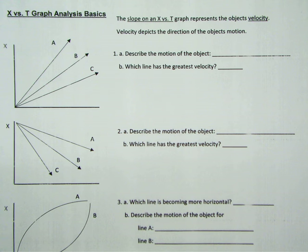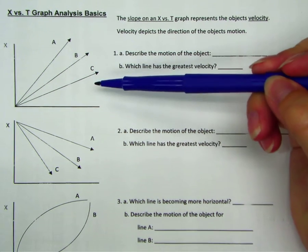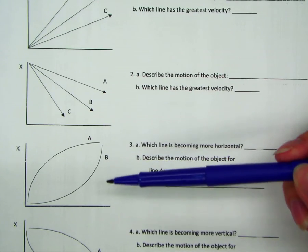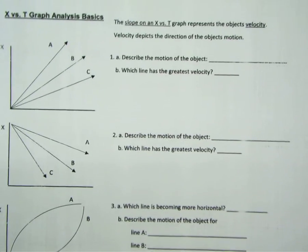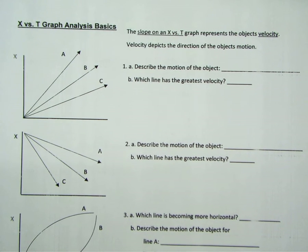There are two different types of x-versus-t graphs. You're going to have a linear representation, and then you're also going to have an exponential representation. So let's talk about the first kind, the linear representation.